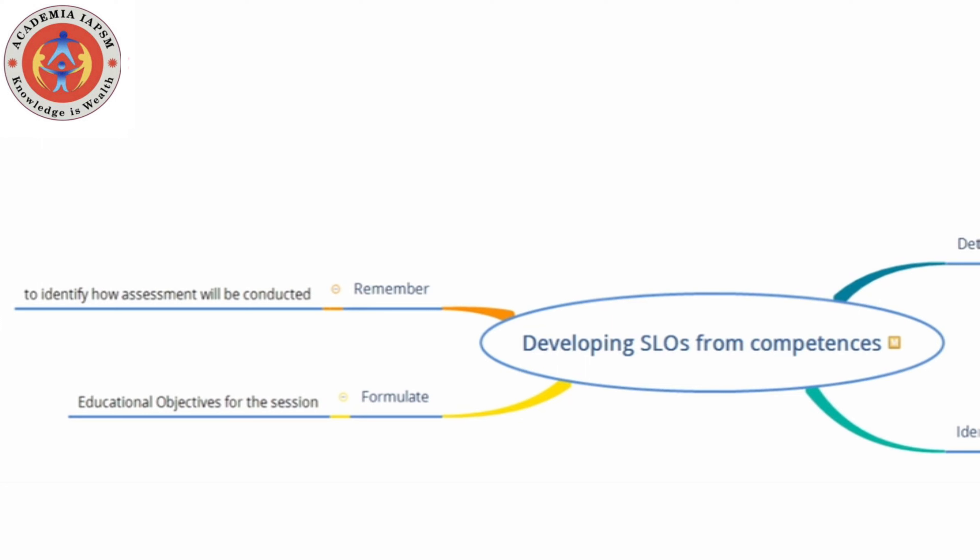Assessment also depends on the objectives. You are working in reverse: you are starting with competencies, identifying the domain and the level, and then looking at various other resources available to you. Based on that, you formulate educational objectives, and you must remember that the educational objectives are linked to the teaching-learning method as well as the assessment.